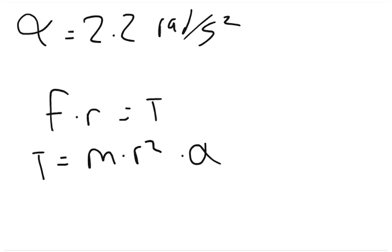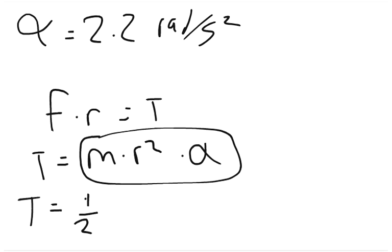However, whenever we have an odd shape, so there are 6 different odd shapes that we can do that have different equations. So one of those is the cylinder and the disc, both use torque equals 1 half times the mass times the radius squared times the angular acceleration.